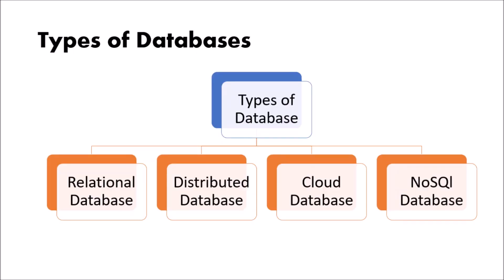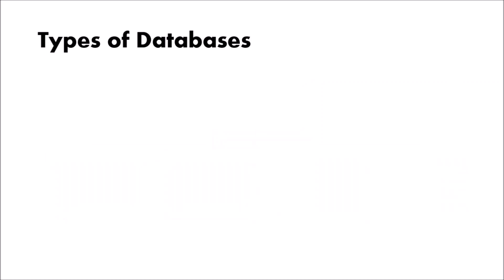Now, what are the different types of databases? There are many types, but the major ones are: first, the relational database; second, the distributed database; third, the cloud database; and fourth, the NoSQL database. We will look at what each of these means.